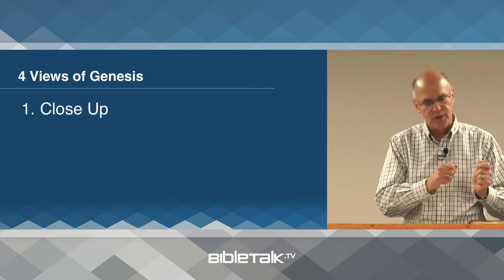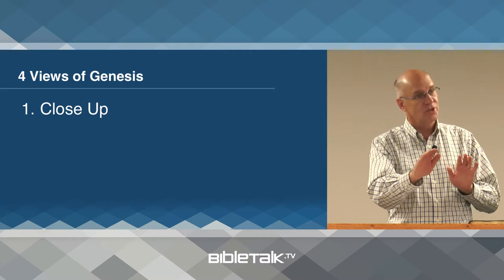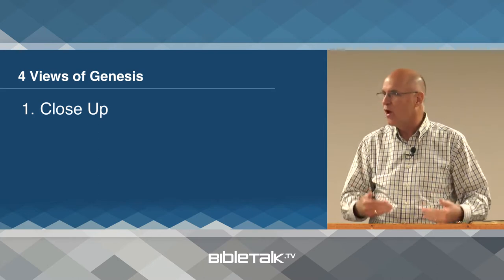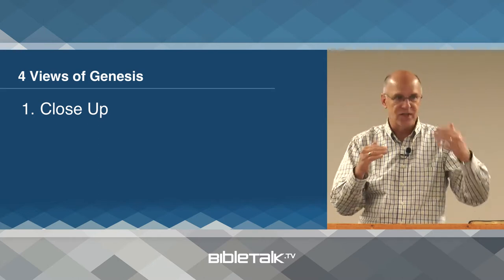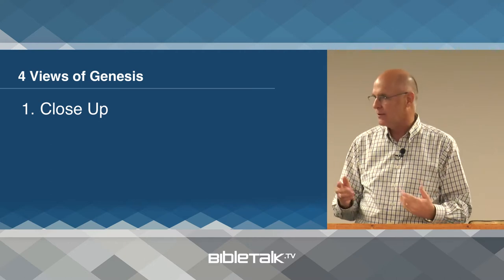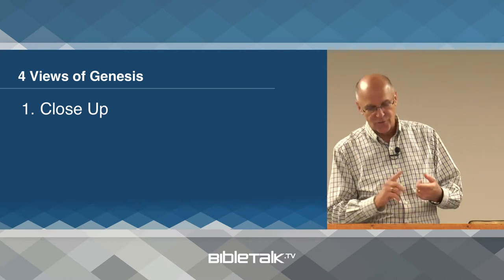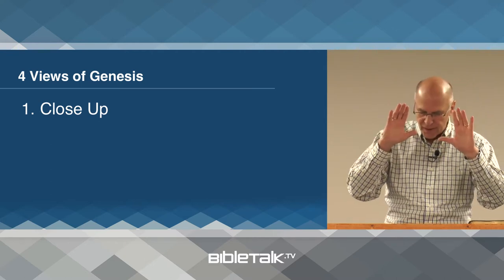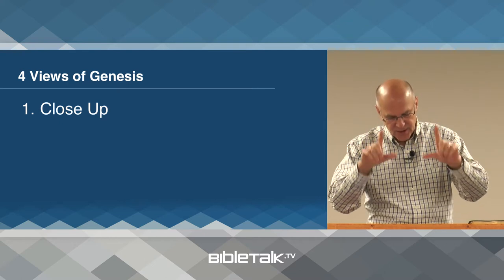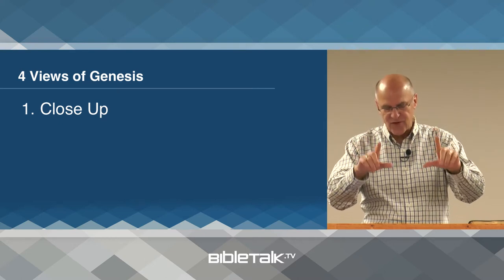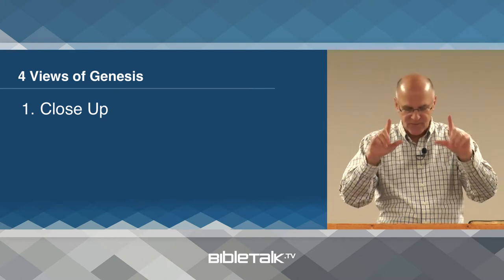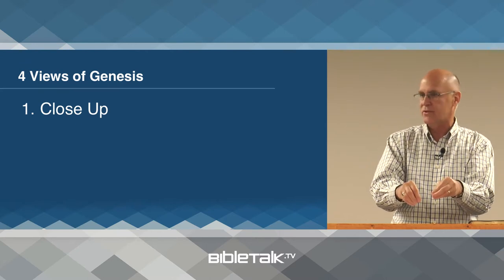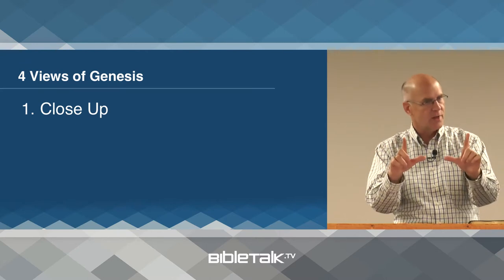The problem with reading Genesis is it transitions from one view to another without telling you. So if you know that there are these four views, you kind of know where you're at. The first view is the close-up view, an intimate look at the situation that features dialogue, thoughts, and feelings experienced by the individuals themselves.